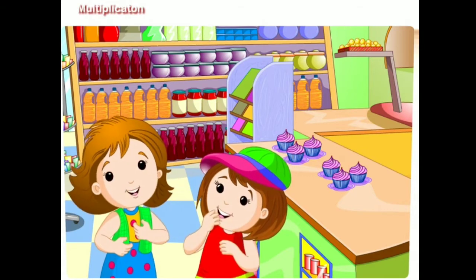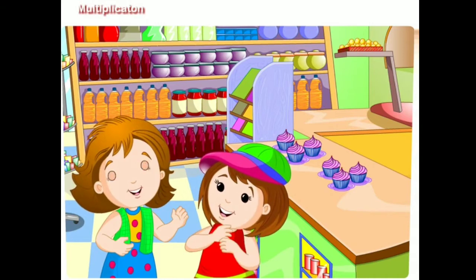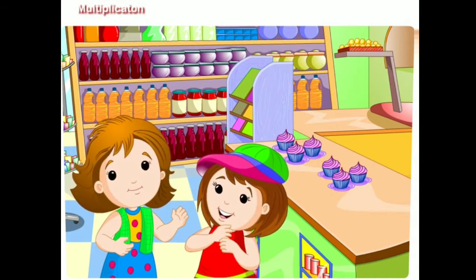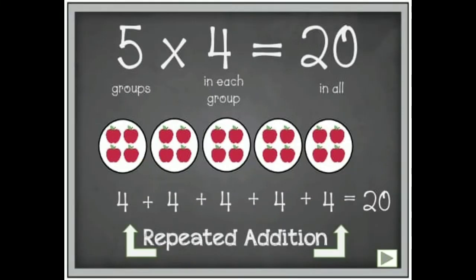It is easy. This is called multiplication. What is multiplication? Multiplication means repeated addition of the same number. Let us understand it. Multiplication means repeated addition of same numbers over and over to solve the multiplication problem.